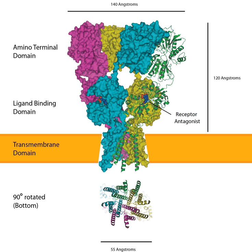The receptor was first named the quisqualate receptor by Watkins and colleagues after a naturally occurring agonist, quisqualate, and was only later given the label AMPA receptor, after the selective agonist developed by Tage Honoré and colleagues at the Royal Danish School of Pharmacy in Copenhagen. AMPARs are found in many parts of the brain and are the most commonly found receptor in the nervous system. The AMPA receptor GLUA-2 tetramer was the first glutamate receptor ion channel to be crystallized.